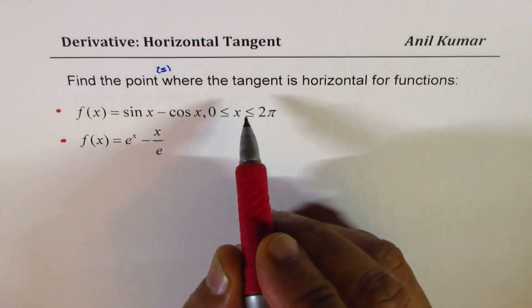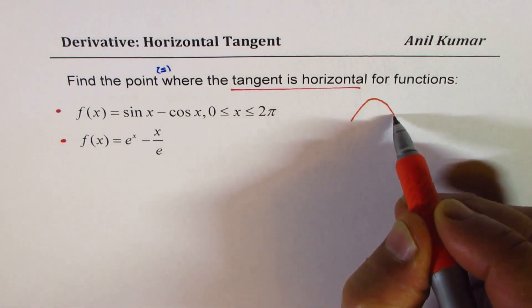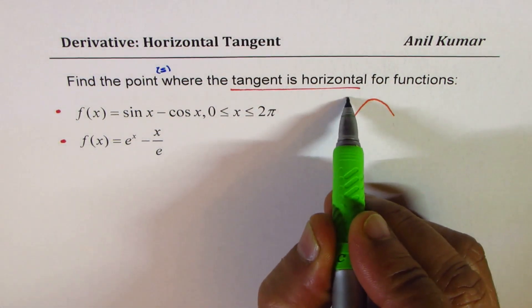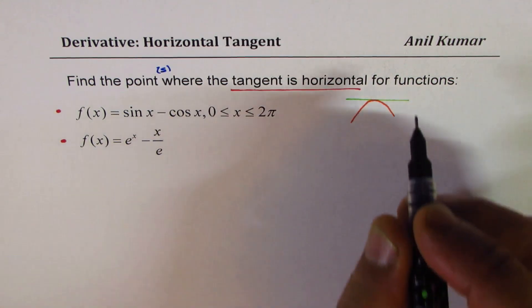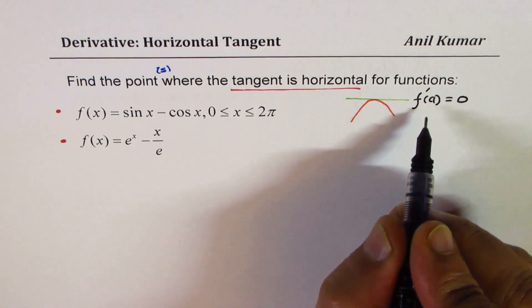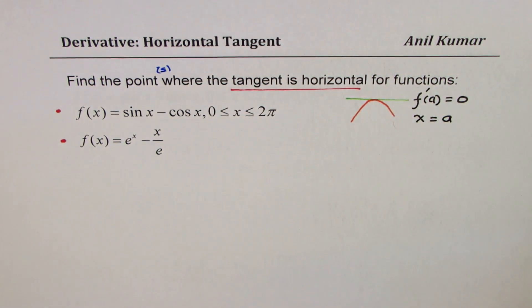What do you understand by a horizontal tangent? If, on the graph of a function, we have a turning point, then at that turning point we will have a horizontal tangent — that's what it means. The slope of this tangent line will be 0. So we are saying that f'(a) = 0, and basically we have to find the value of a. I hope the question is clear.